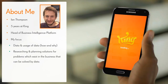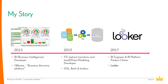Ian Thompson has been at King for five years and is currently head of the business intelligence platform, with a focus always on data, usage of data, and researching and planning solutions for problems that can be solved with data. He initially joined as a QlikView developer, working in that area for a couple of years — QlikView being a data discovery product for guided analytics and dashboards — before expanding into the data warehouse. In 2017, he began owning King's business intelligence offering after discovering how powerful Looker was internally.